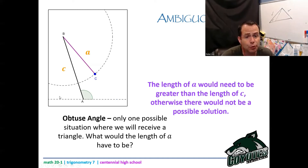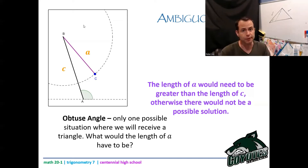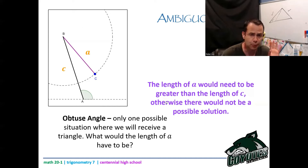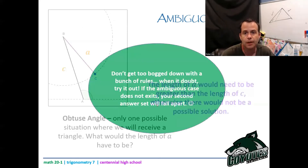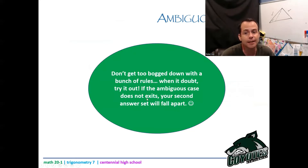Even if you don't know exactly whether you have the ambiguous case or not, pretend that you do. What's going to happen is if you don't actually have the ambiguous case, the second case is going to fall apart very quickly. You'll end up with a negative angle, or something that's not possible. When in doubt, try it out. If the ambiguous case does not exist, your second answer will fall apart.